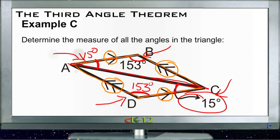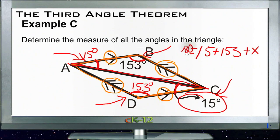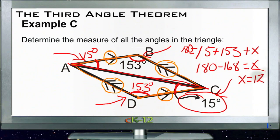Both triangles have 15 degrees plus 153 degrees plus a missing angle equaling 180 degrees. Since 153 plus 15 is 168, we subtract 168 from 180 to get the missing angle. That missing angle must be 12 degrees. So the missing angle on both triangles is 12 degrees.